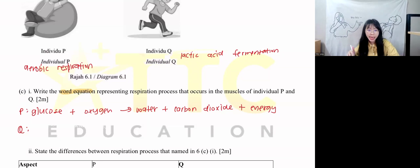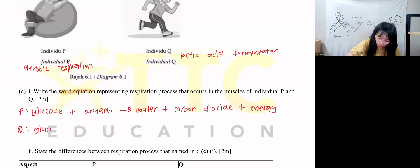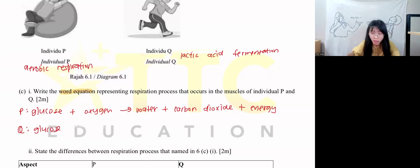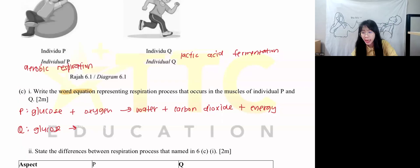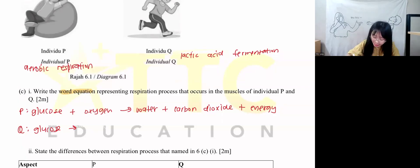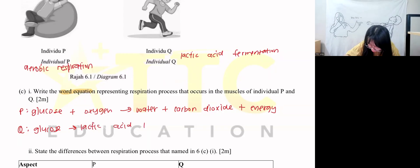For lactic acid fermentation, also start with glucose. No oxygen is needed here — it produces only two products: lactic acid and energy.